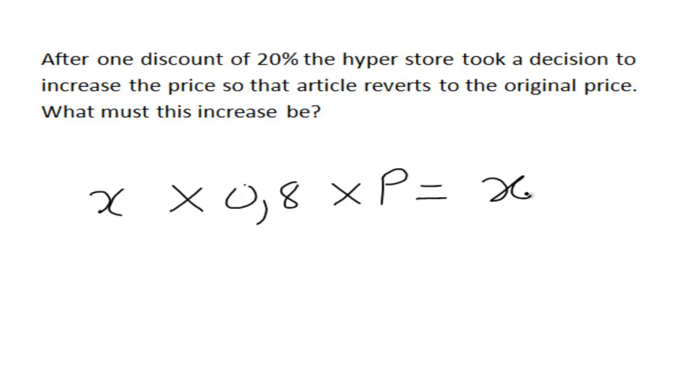So the X's will cancel off, it will actually be 1 on the side. So P is equal to 1 divided by 0.8, which is 8 over 10.